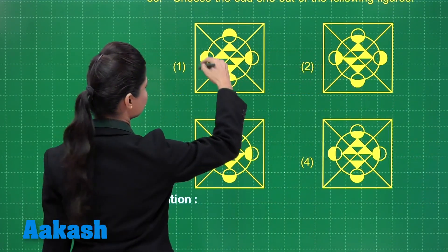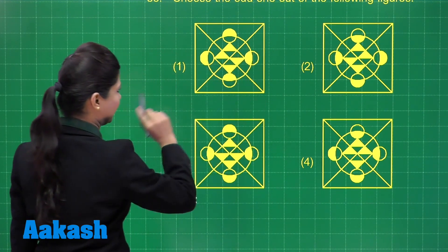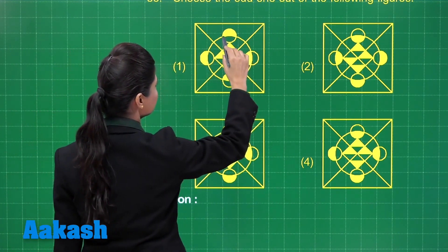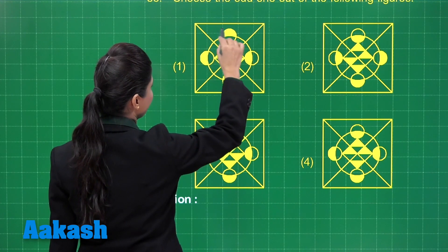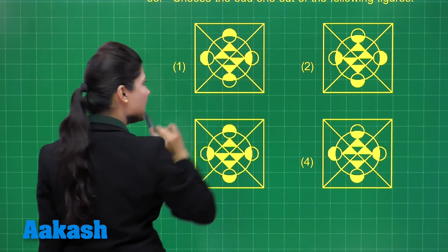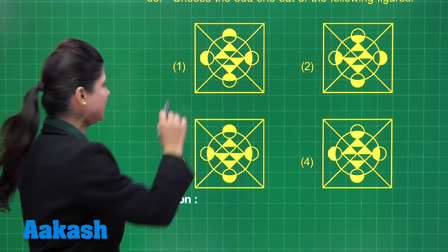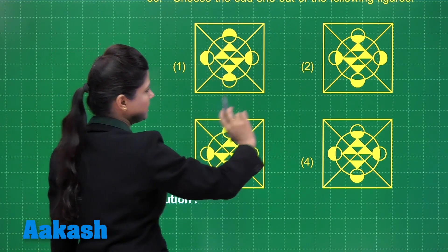You can see a circle inside the square. Here we have smaller circles where first the upper halves are coloured, then the upper halves are blank. This pattern is being followed in the consecutive two circles.